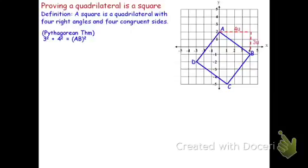The only segments that can be counted on a grid are those that are horizontal or vertical. Continuing this problem: three squared is nine, four squared is sixteen, nine plus sixteen is twenty-five, so AB squared is twenty-five. In order to find what AB is, we square root both sides, and we find that AB is five units.